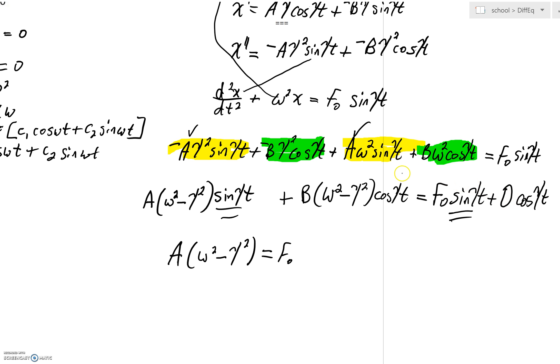When we're looking at our coefficient of cosine, we'll have B(ω² - γ²). And we can set that actually equal to zero.